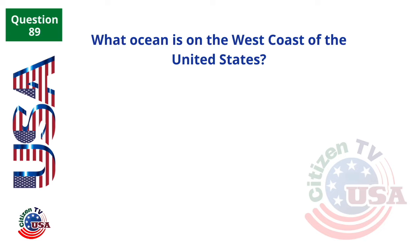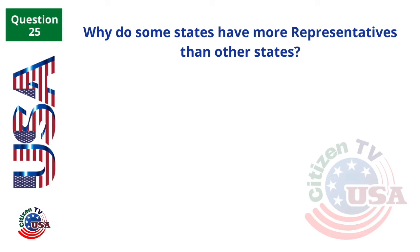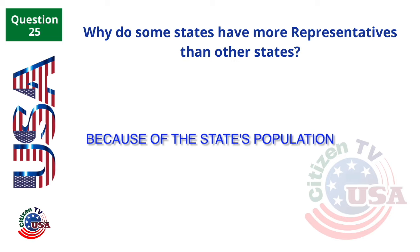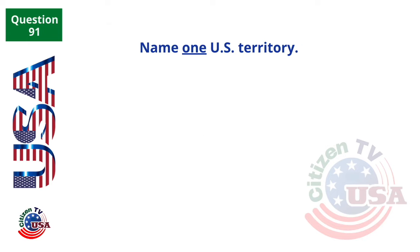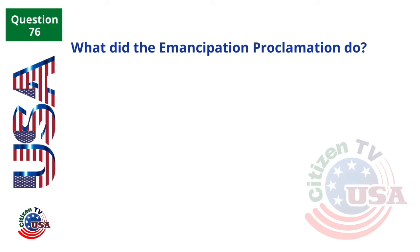What ocean is on the west coast of the United States? Pacific Ocean. Why do some states have more representatives than other states? Because of the state's population. Name one U.S. territory. Guam. What did the Emancipation Proclamation do? Free the slaves.